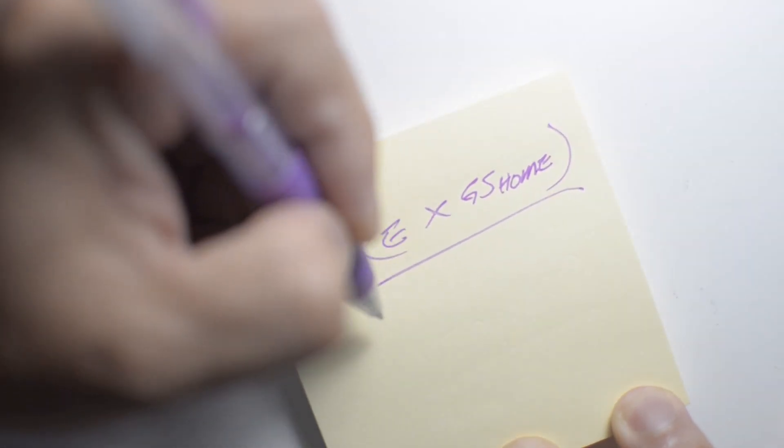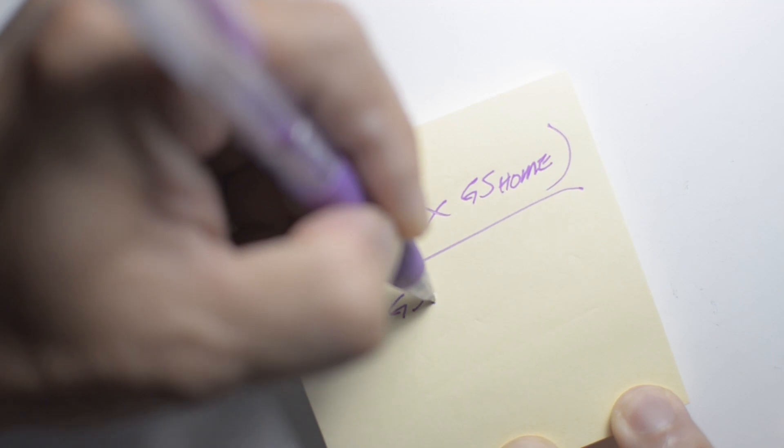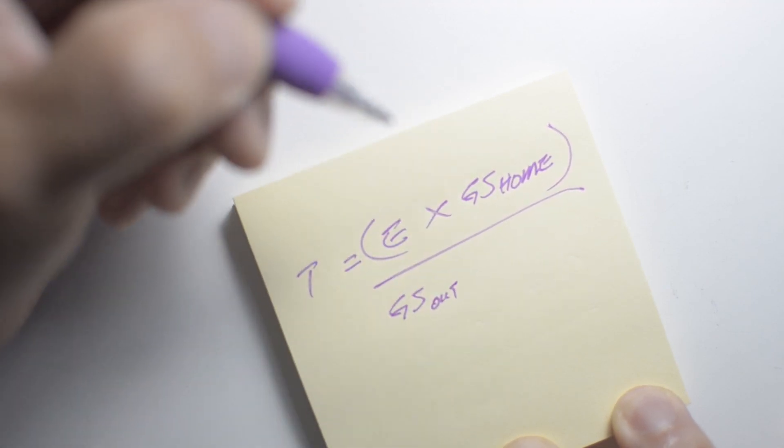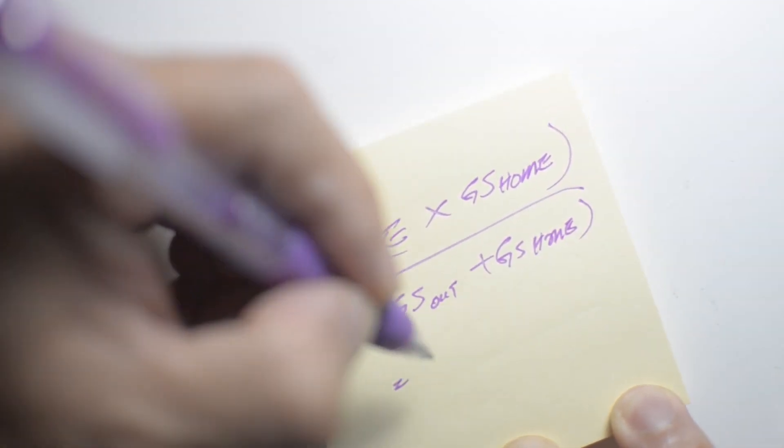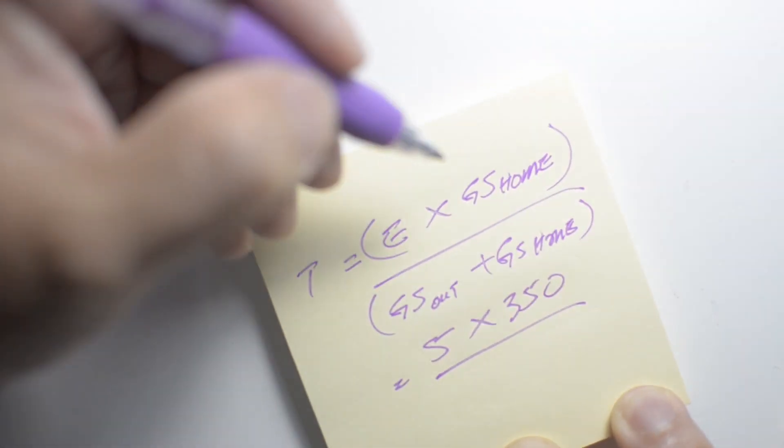And I'm going to put that in brackets, and that's over the ground speed out, or ground speed onwards, plus ground speed home. And we know that the endurance is equal to 5 hours, and the ground speed home is 350. And we know that the summation of those two ground speeds is 600.